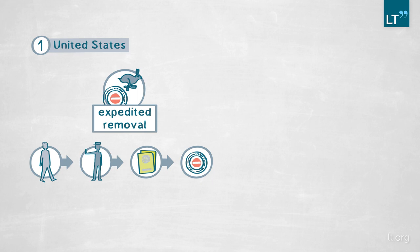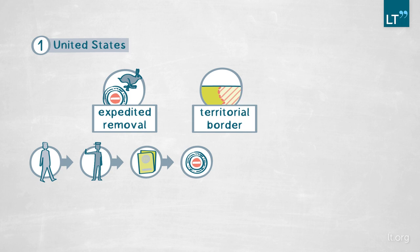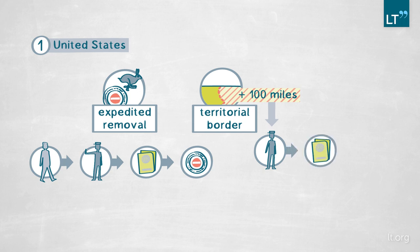The federal government also added one other change: expedited removal now occurs not just at the territorial border, but within a zone of 100 miles away from the border. Two-thirds of the U.S. population — about 200 million Americans — reside in that zone. Border authorities or any law and order authority is permitted to ask you to provide documentation indicating your right to remain, randomly and without probable cause, which typically is not something authorities are permitted to do once you are physically within the territory. This has led some individuals to say that within the United States we now have a constitution-free zone.